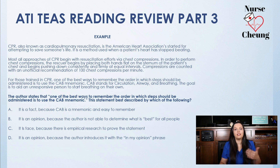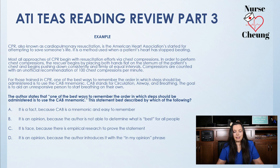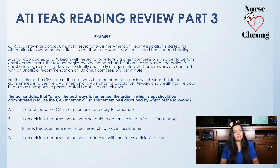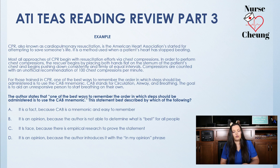For this example we'll use the CPR passage covered in a previous video. CPR, also known as cardiopulmonary resuscitation, is the American Heart Association standard for attempting to save someone's life. It is used when a patient's heart has stopped beating. Most CPR approaches begin with chest compressions — the rescuer places both hands flat on the sternum and pushes down consistently and firmly at equal intervals. Compressions are counted with an unofficial recommendation of 100 chest compressions per minute. For those trained in CPR, one of the best ways to remember the order is to use the CAB mnemonic: Circulation, Airway, and Breathing. The goal is to aid an unresponsive person to start breathing on their own.